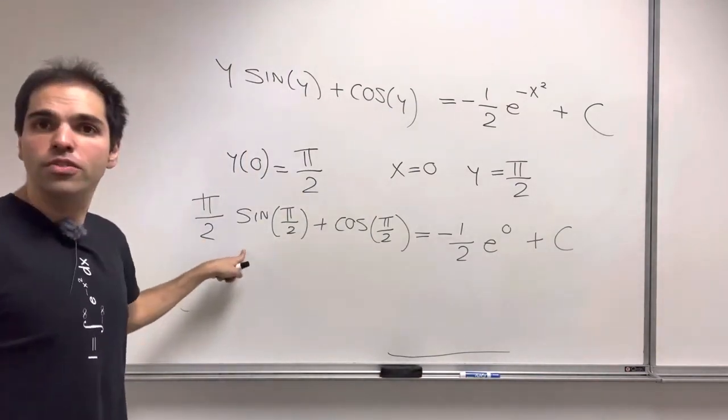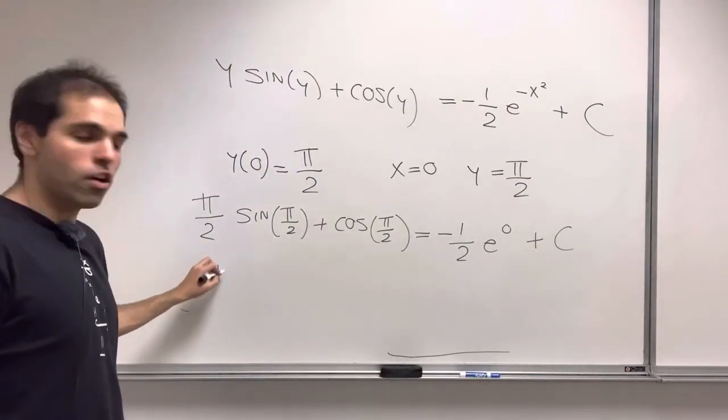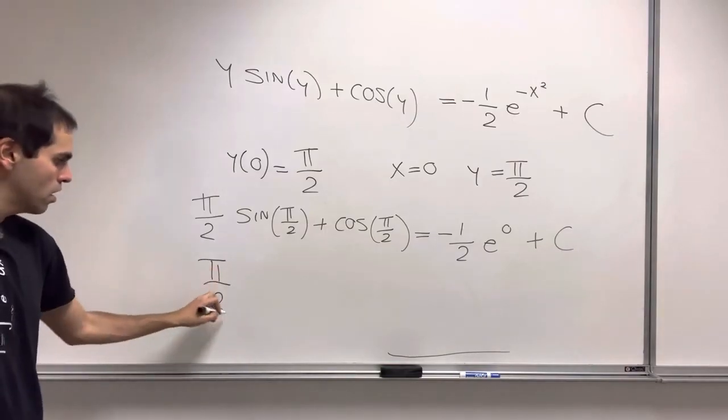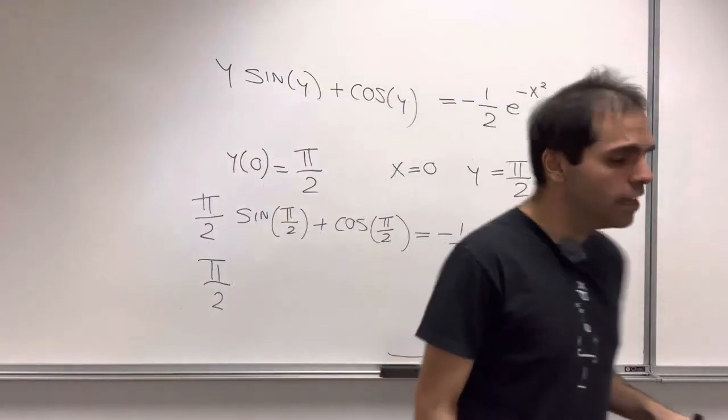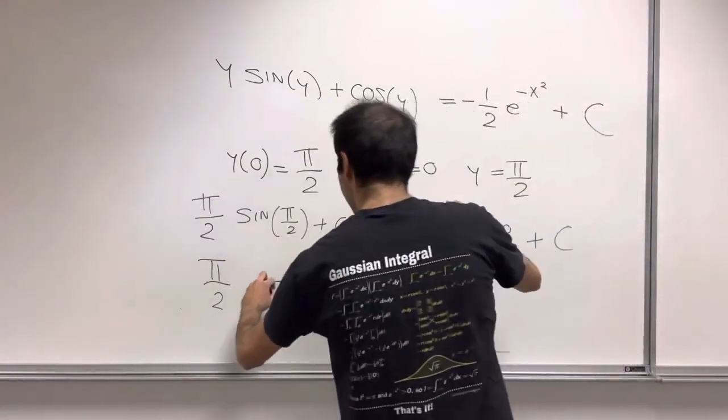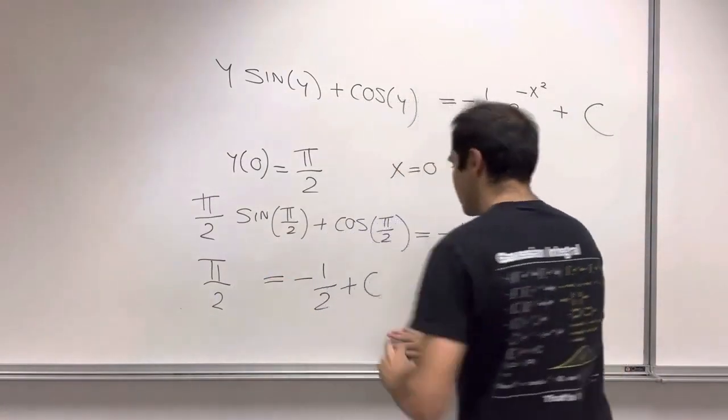So then what we get is 1 plus pi over 2. And sine of pi over 2, that's 1. So we're left with pi over 2. Cosine of pi over 2 is 0. So we leave it like that. Equals minus 1 half plus a constant.